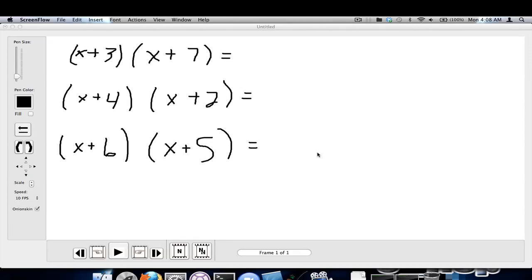What's up YouTube, today I'm going to show you how to simplify two binomials. First you want to multiply the first two parameters: X times X is X squared.